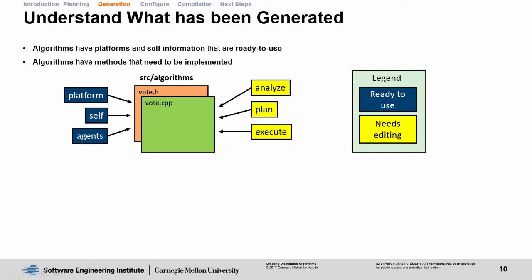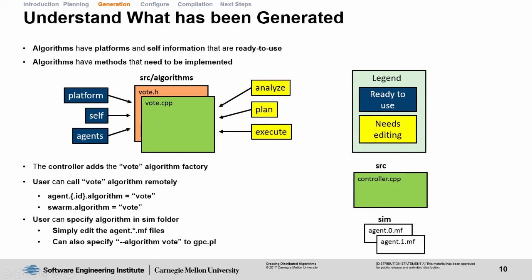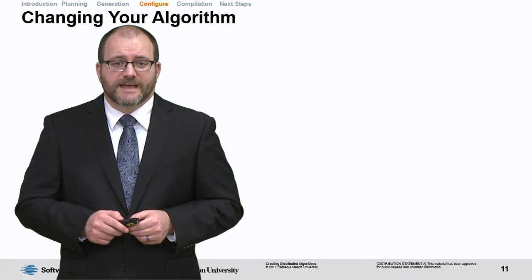The controller adds this vote algorithm factory into itself so that you can call it later. The controller has also been modified to include a vote algorithm factory. This factory allows users to call vote remotely by either modifying the agent.id algorithm variable or the swarm.algorithm variable. Agent.id's algorithm variable is essentially specific to a certain agent. You're telling agent.zero, for instance, to run vote by itself. If you run swarm.algorithm equals vote, then you're telling the entire swarm, all the agents participating in your simulation or deployment, to also run the vote algorithm. Users can additionally specify algorithm in the sim folder or specify algorithm vote to the gpc.pl when generating your algorithm.